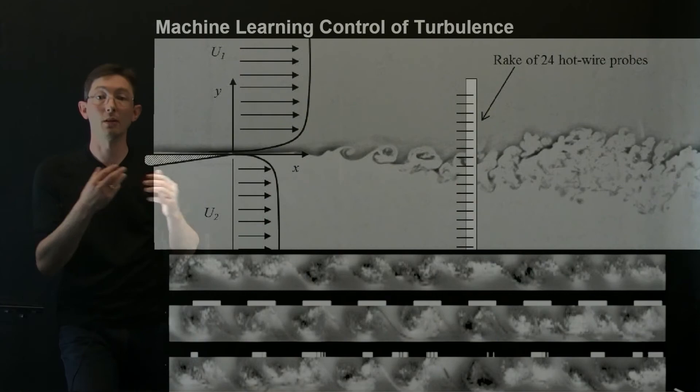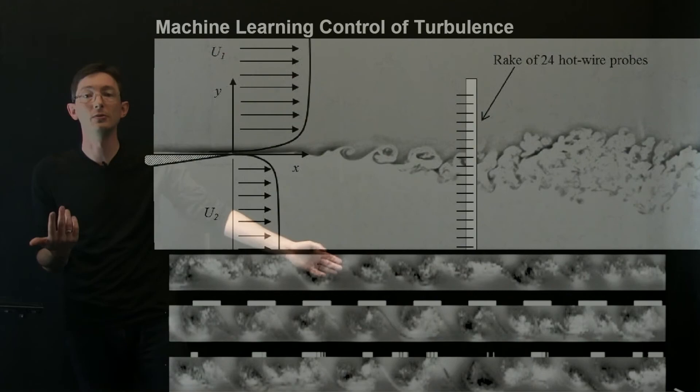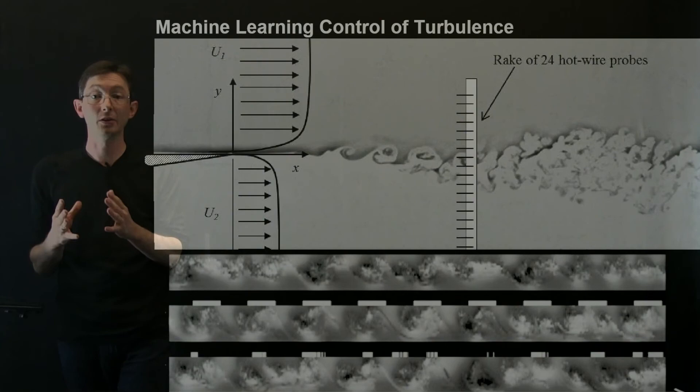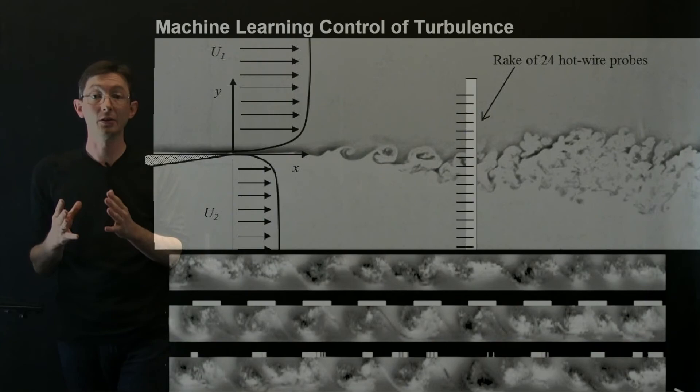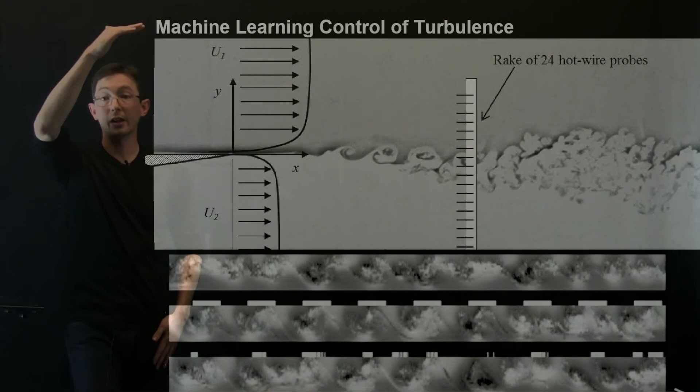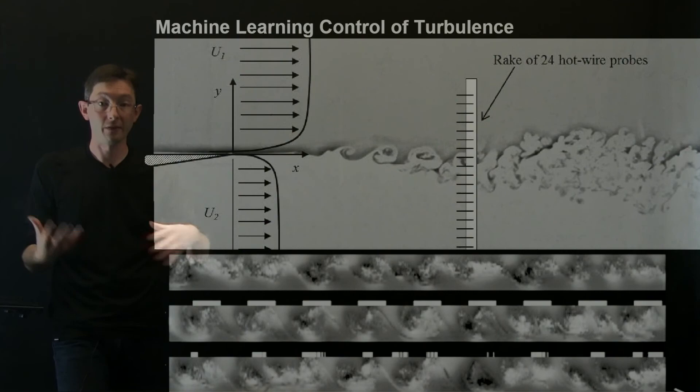I don't know exactly how long this time range is, but I think this was something like two seconds. So within a very short amount of time, you can tell was this a good control law or a bad control law. You can try hundreds of individuals in a generation, dozens of generations in the matter of a day. So you can get the data you need to do this machine learning optimization, this genetic programming control in a matter of hours, if you have a fast experiment.